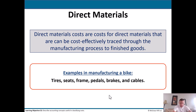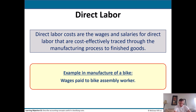Direct materials are costs for buying materials that can be cost-effectively traced through the manufacturing process to finished goods. Examples in manufacturing a bike: tires, seats, pedals, brakes, frames, cables — things that directly go on a bike. Then there's direct labor — the second type of direct costs. Direct costs are always direct materials and direct labor, and then everything else gets put into another category called factory overhead, or sometimes just overhead or manufacturing overhead. If you hear overhead, think of something that didn't fit into the direct labor or direct material category.